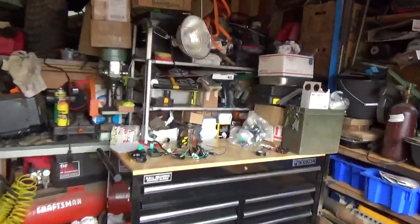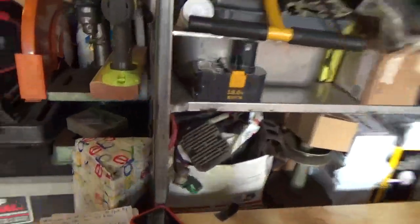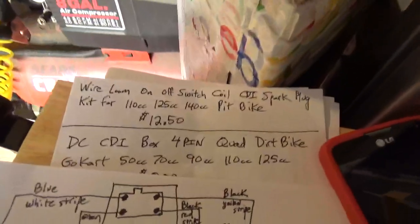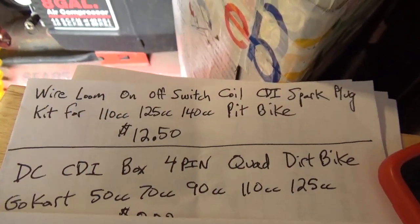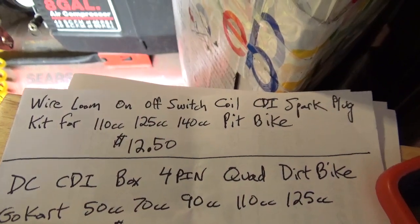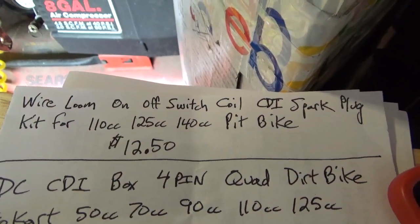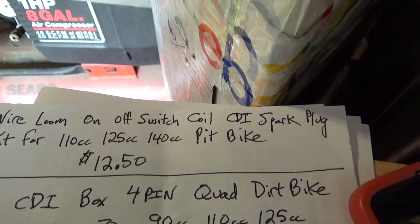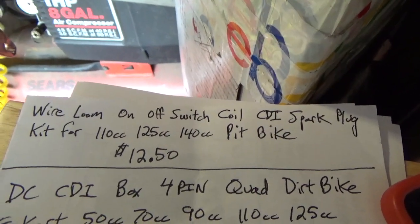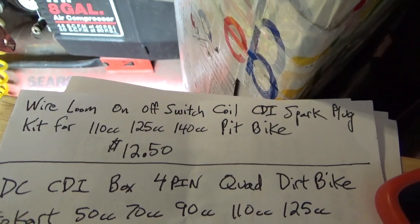I always start off with the following: I go to that major auction site and do a quick search on the top words there: wire loom on off switch coil CDI spark plug kit for 110 125 140 pit bike.